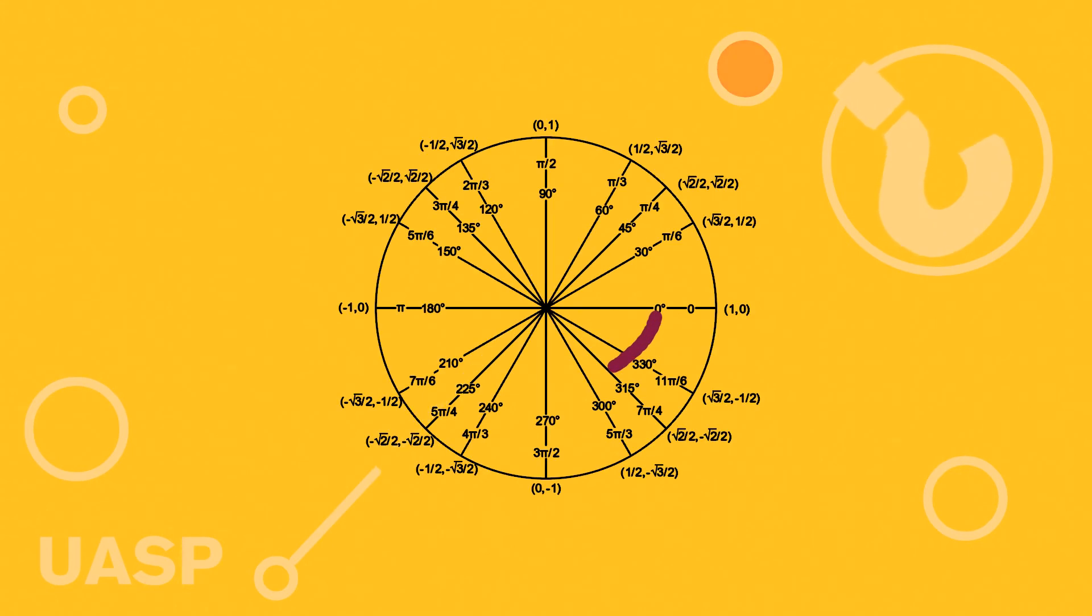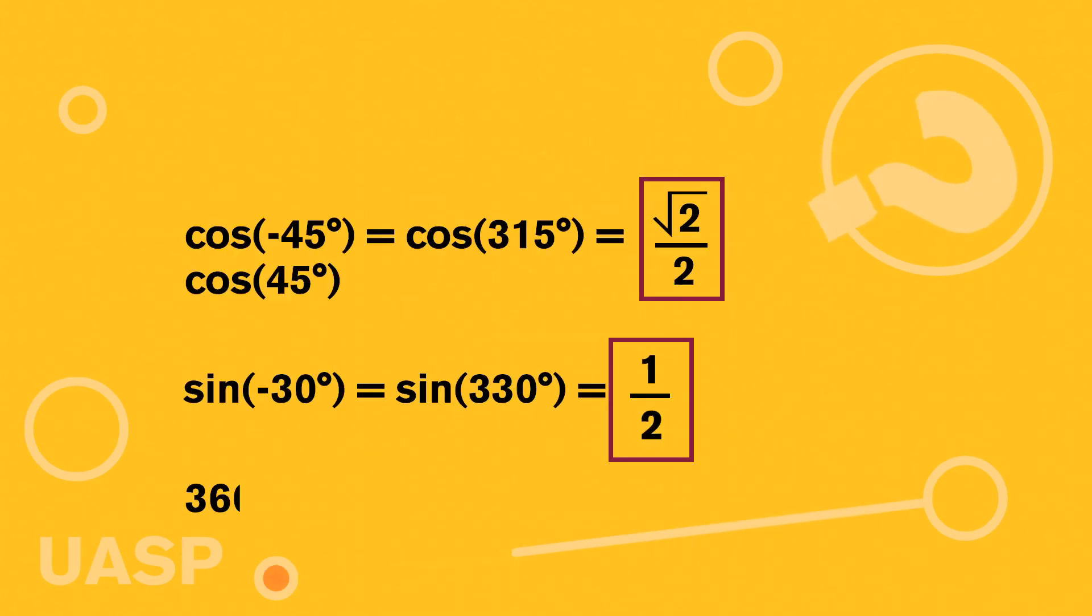Another way that you can also look at, in case you maybe forget that you have to go clockwise instead of counterclockwise, another way that you can also do it is just to subtract the number in here that's negative from 360. So 360 minus 45 equals 315, and then 360 minus 30 equals 330, which were both of those respective angles that we found. Just another way to look at it.